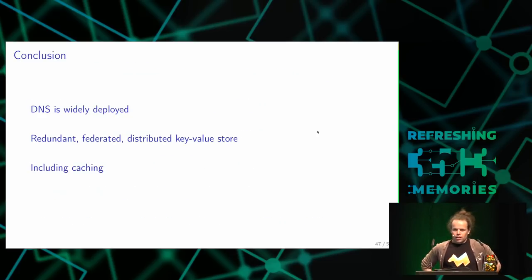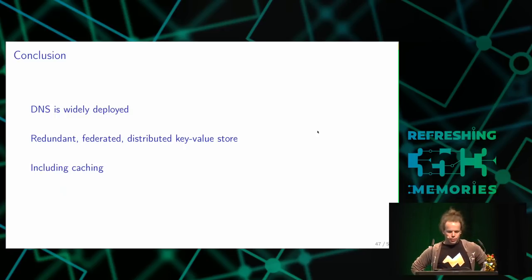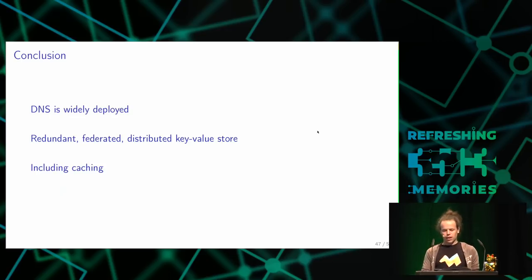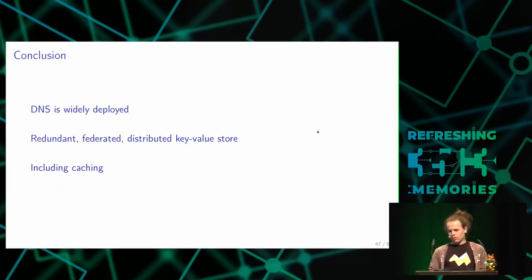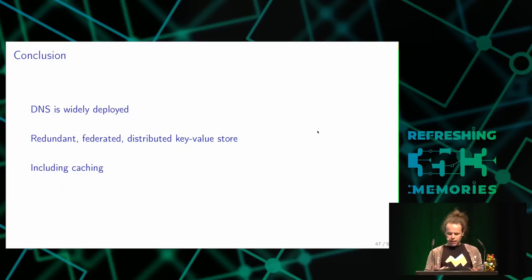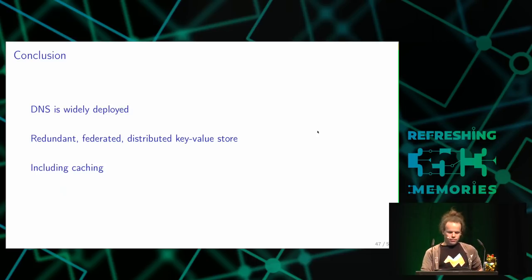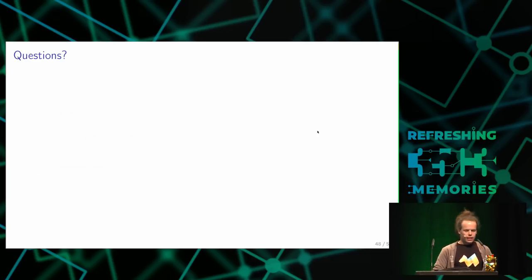To conclude: DNS is widely deployed and has been around for 30 years. I believe it will be around for at least another 50 years. It's a redundant and federated distributed key-value store that already includes in-protocol caching, dynamic updates, and authentication. It's a pretty complete protocol.